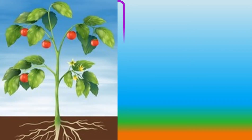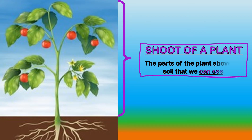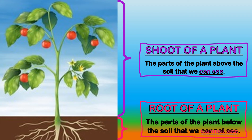This is called the shoot of a plant — the parts of the plant above the soil that you can see. This is called the root of a plant — the parts of the plant below the soil that you can see.